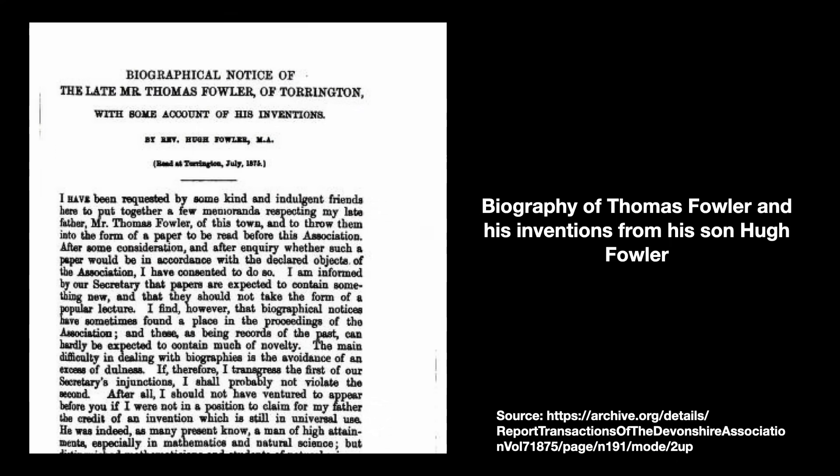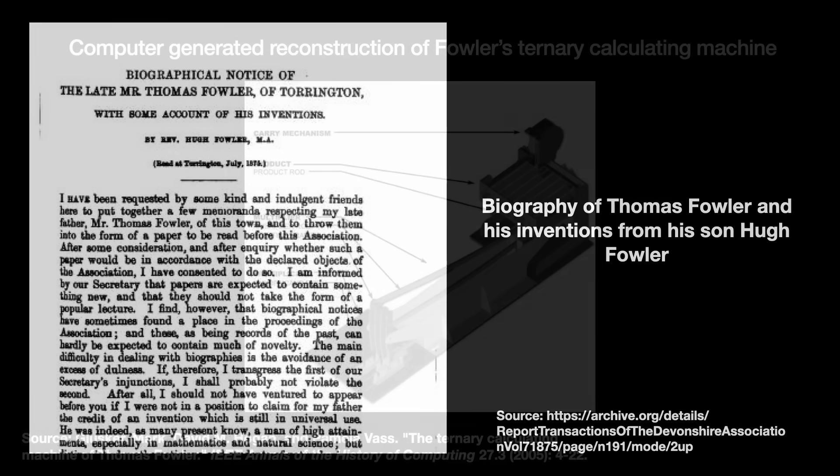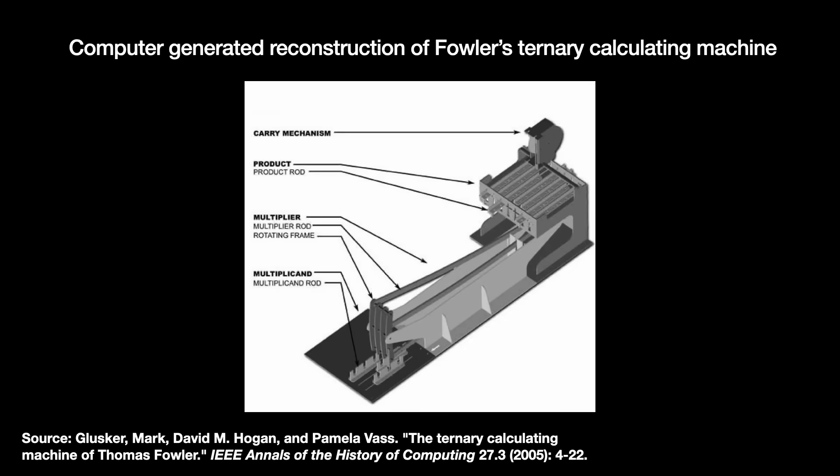The oldest known effort to produce a ternary computing device dates back to 1840, apparently done by a self-taught inventor named Thomas Fowler. According to a biography written by his son Hugh, Fowler produced a ternary mechanical calculator said to be easy to use and praised by the era's mathematicians. It was lost after Fowler's death in 1843, but historians did a reconstruction 150 years later based on a detailed written description.